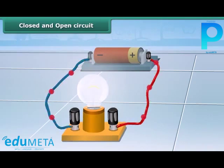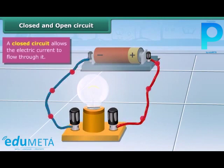Closed and open circuit. If you see both the wires are connected to both the terminals, it is an unbroken path. It is a closed circuit.